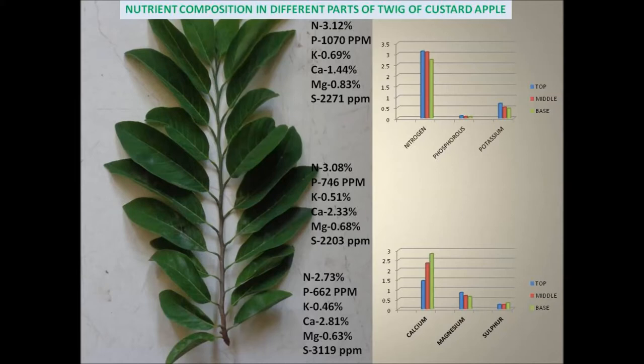Custard Apple belongs to family Annonaceae and is a deciduous or semi-deciduous woody shrub having irregular spreading branches. It prefers warm and humid climate. It can be grown in varied soil right from heavy clay up to sandy one. However, well-drained red fertile soil with neutral pH will be ideal.